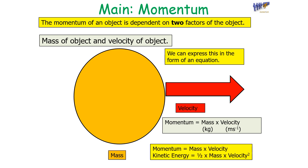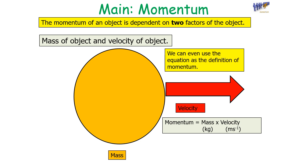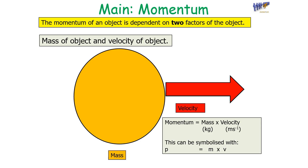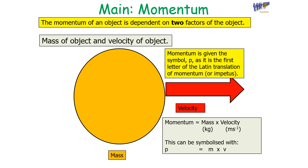We can use the equation as the definition of momentum: linear momentum is the product of mass and velocity, symbolised as p = mv. Momentum is given the symbol p as it's the first letter of the Latin translation of the word momentum, or impetus.